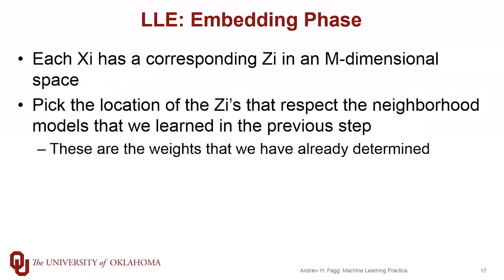So here we introduce a new feature space. It's an M-dimensional feature space. We're going to designate points in this space as Zs. And for each point that we had in our original training set, the XIs, we have a corresponding ZI in this new space.